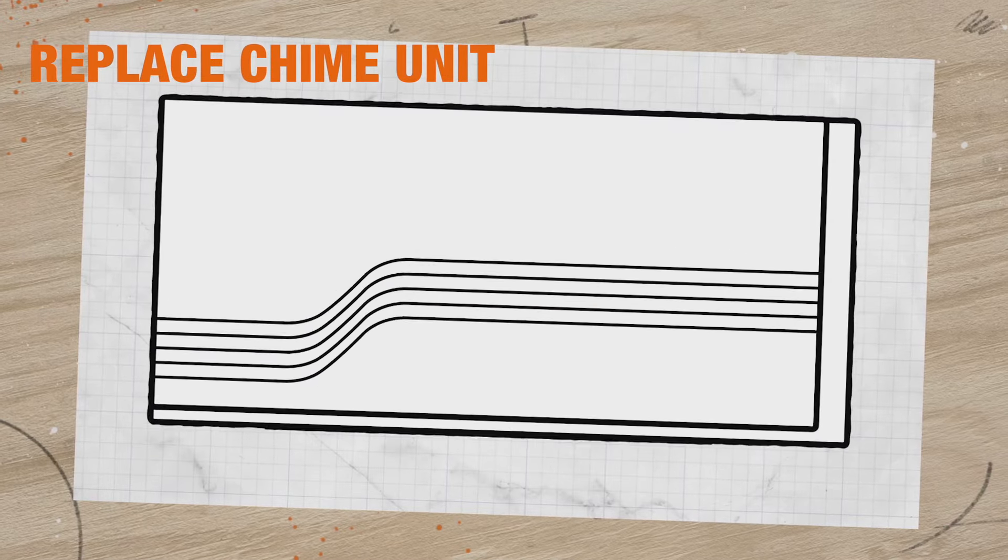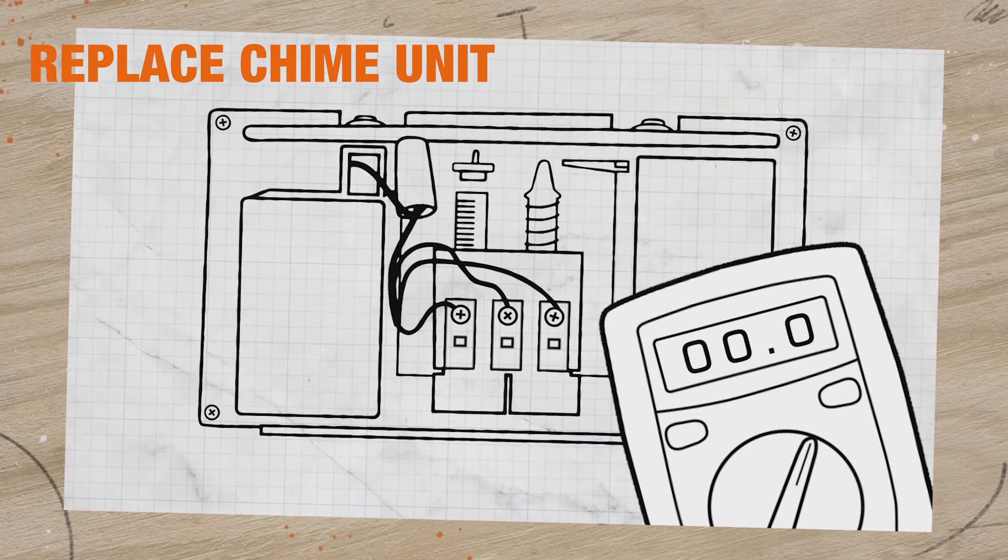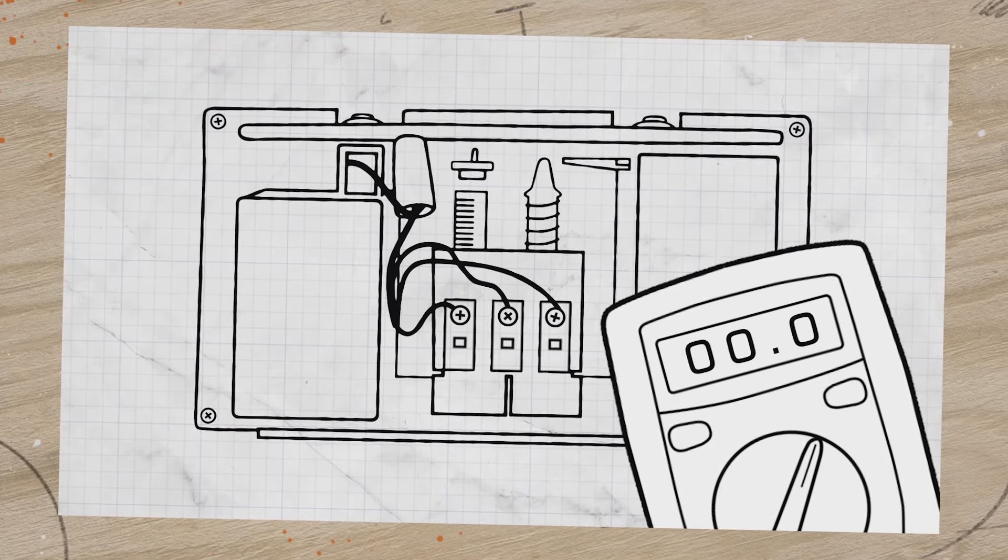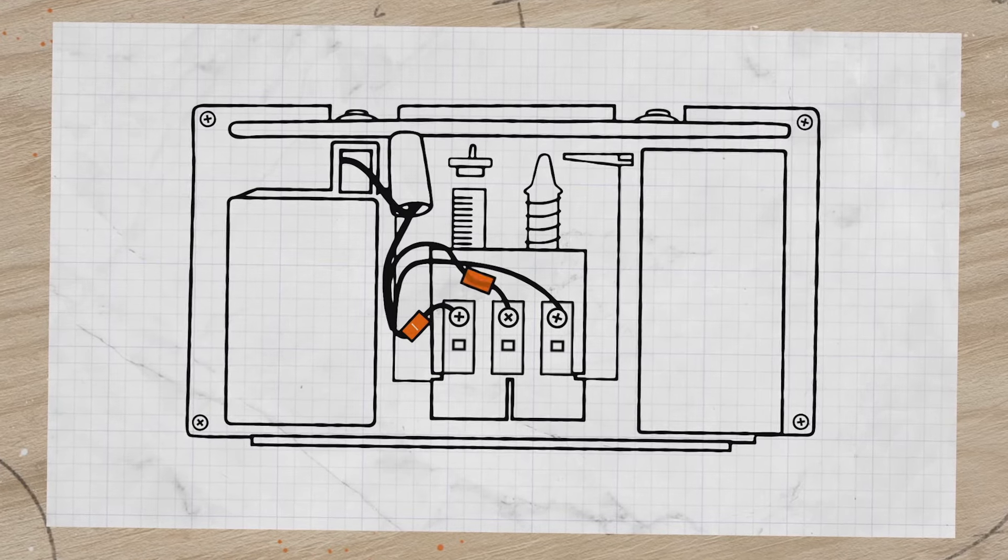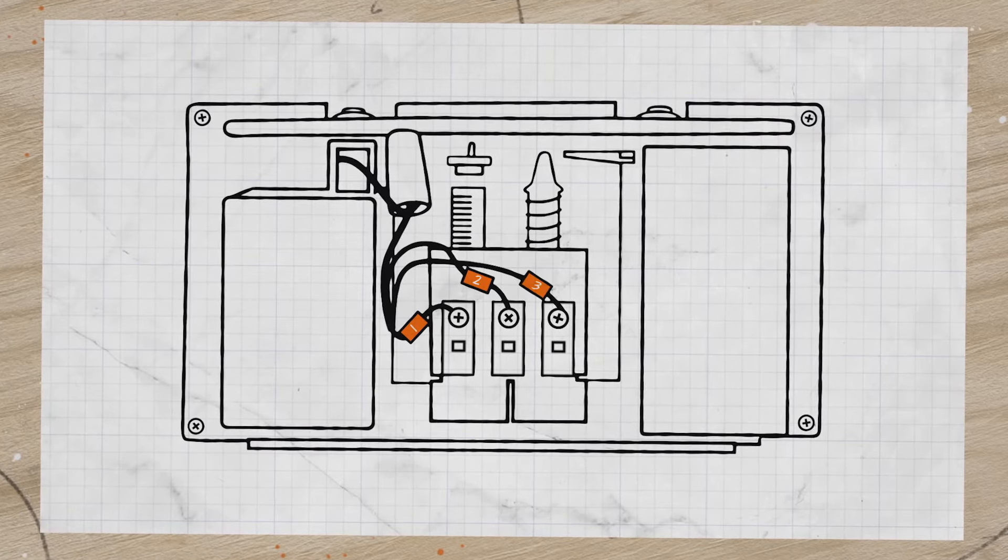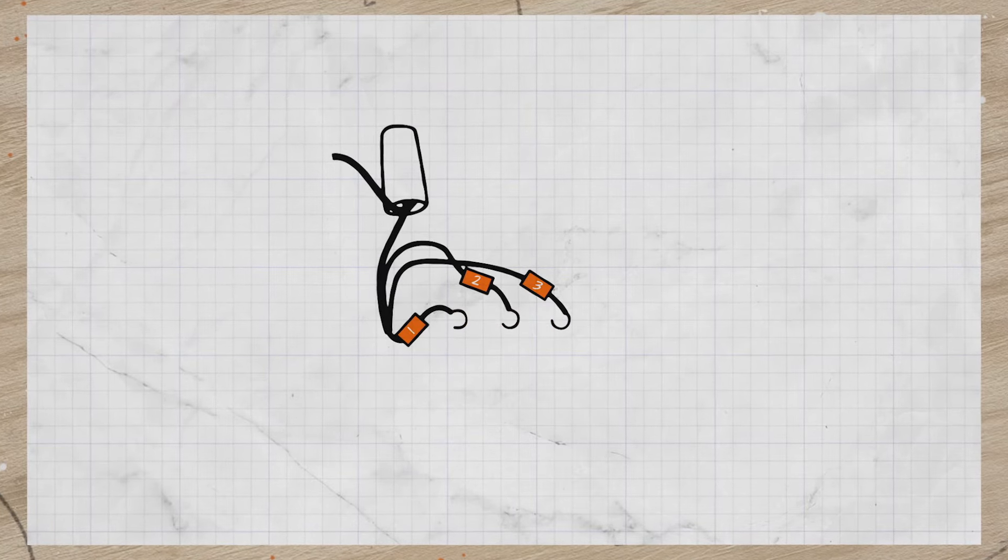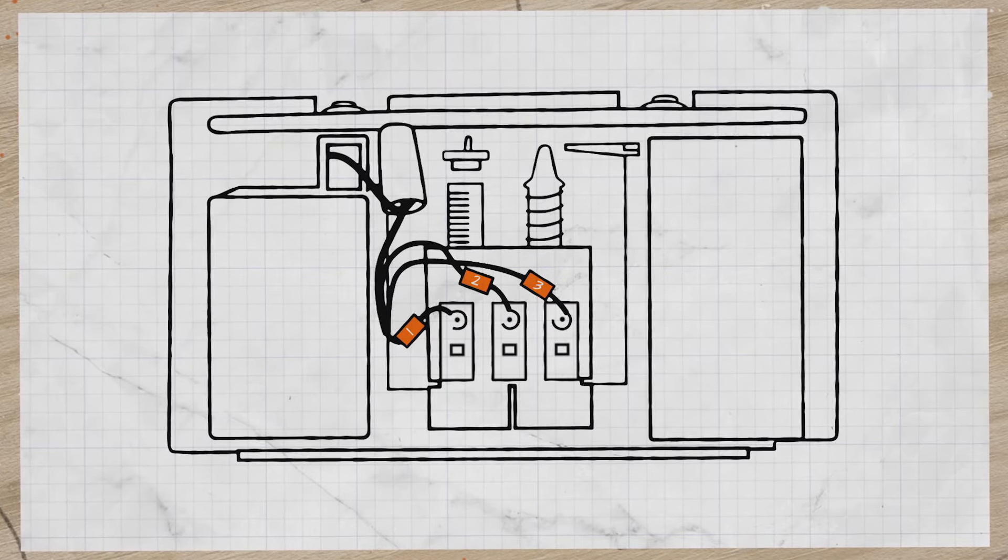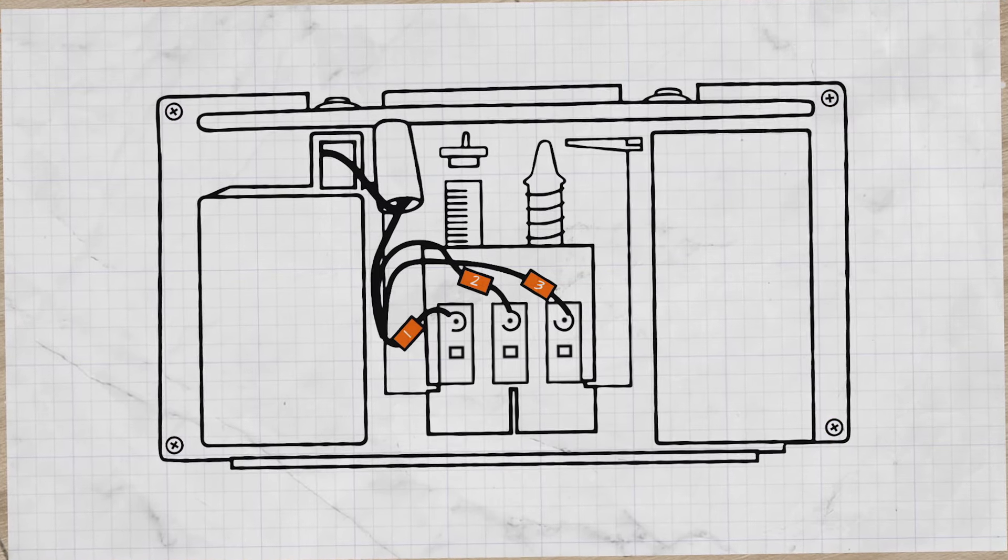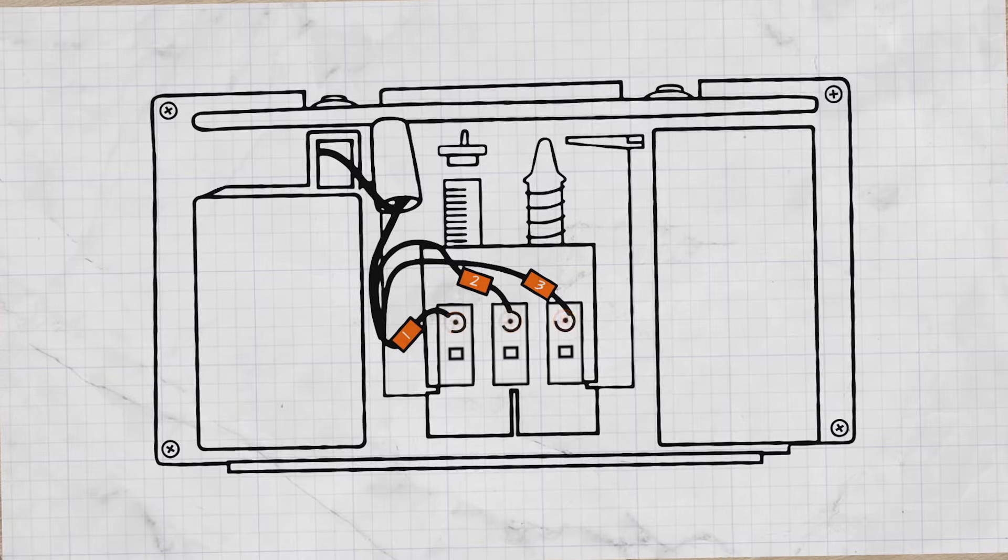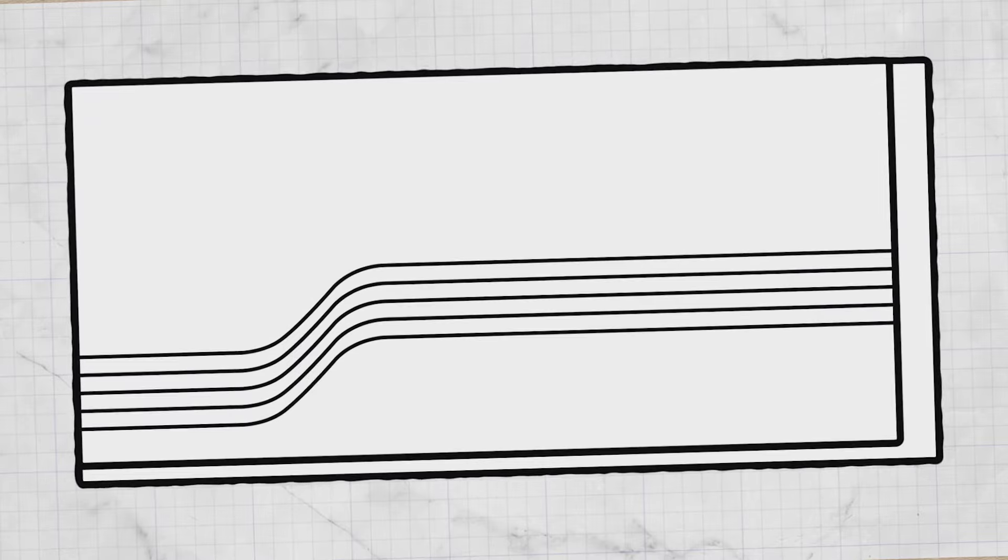To replace the chime, first remove the cover and use a voltage tester to confirm the power is off. Use tape to mask the front doorbell wire, rear doorbell wire, and transformer wire. Unscrew the chime unit and remove it from the wall. Thread the wires through the back of the new chime unit. Mount it to the wall according to the manufacturer's instructions. Connect the wires to their appropriate screw terminals. Tighten the screws and snap the cover in place.